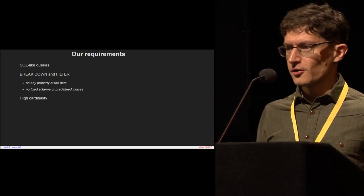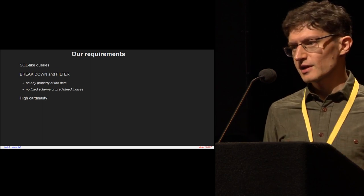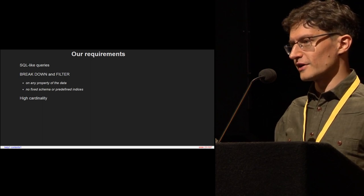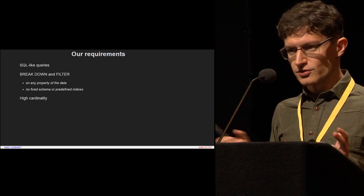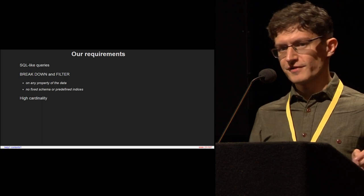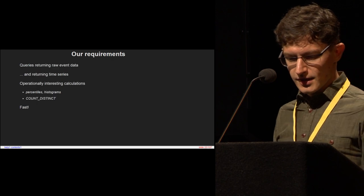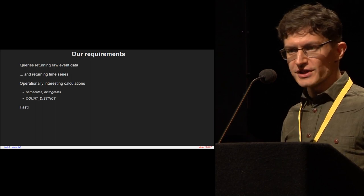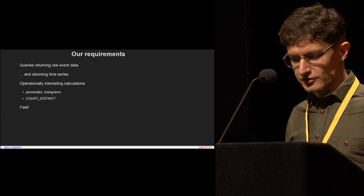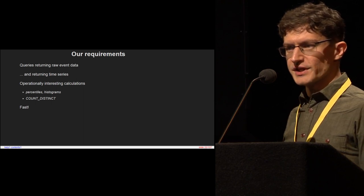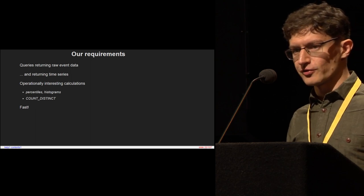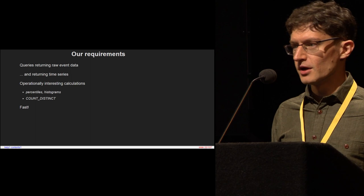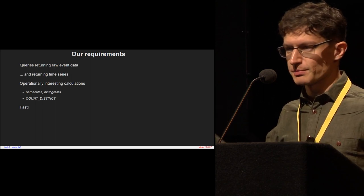And you can do these breakdowns even if the fields have high cardinality, which is something that traditional time series products kind of struggle with. Build ID is one example — if your software has been developed for a while, you might have hundreds of different builds. A more interesting example: breakdown by user ID. That example of 'show me how many users were affected by this error' means you need to be able to break down by a field where there might be a million values. You might have a million user IDs. So we need our queries to be able to return raw events, and we also need to return time series because graphs are really helpful for spotting patterns.